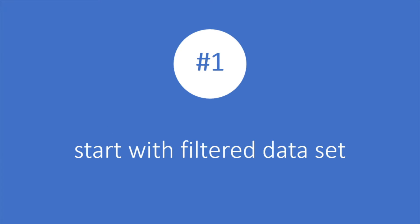So number one: start with a filtered data set. I can't tell you how many times a query has been performing really slow. The user complains it takes forever to load. And the first thing I notice when hopping into the procedure or the query is that everything is being done at the same time. There's no separation of data and you're looking at full tables — there's no filtering whatsoever, which means that every single join that's happening, every case statement, every transformation is happening on every record in every table.